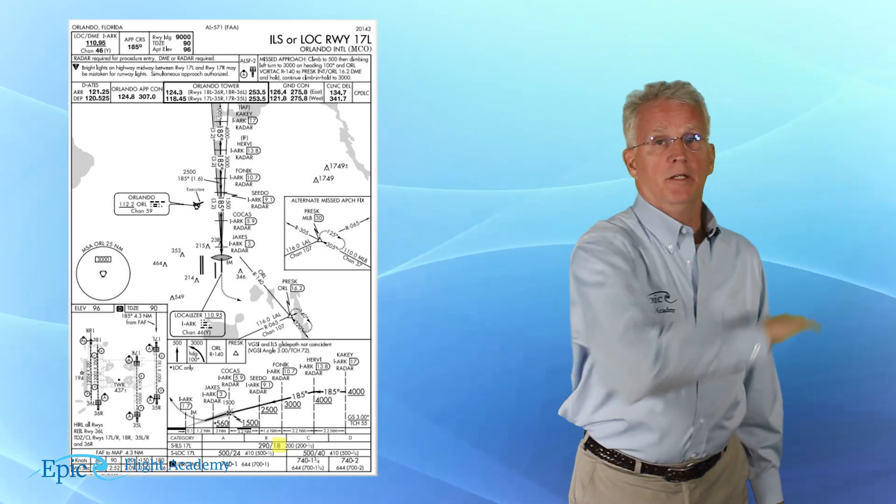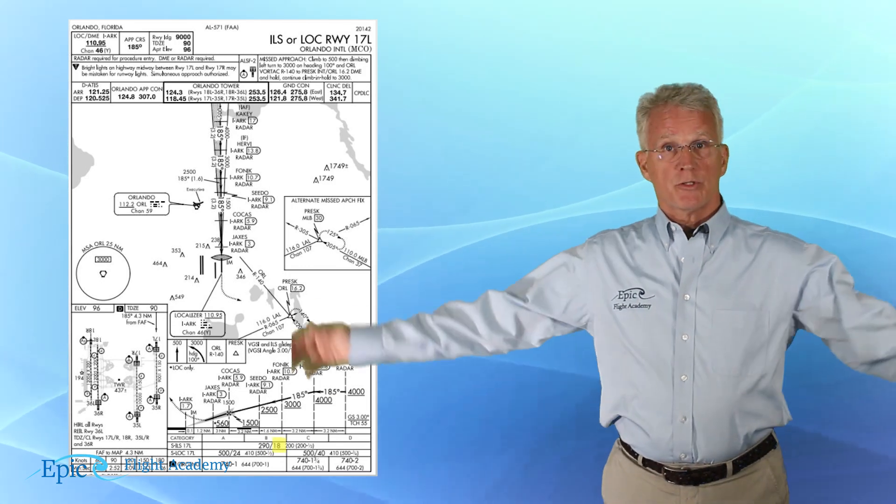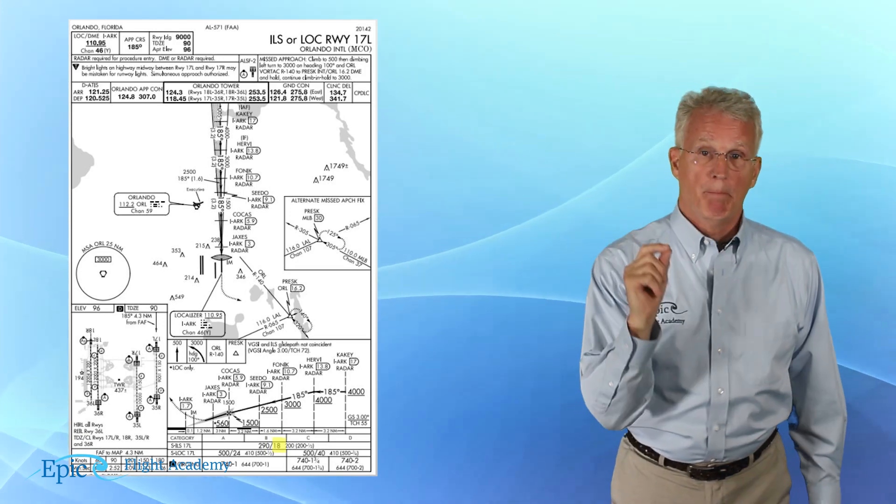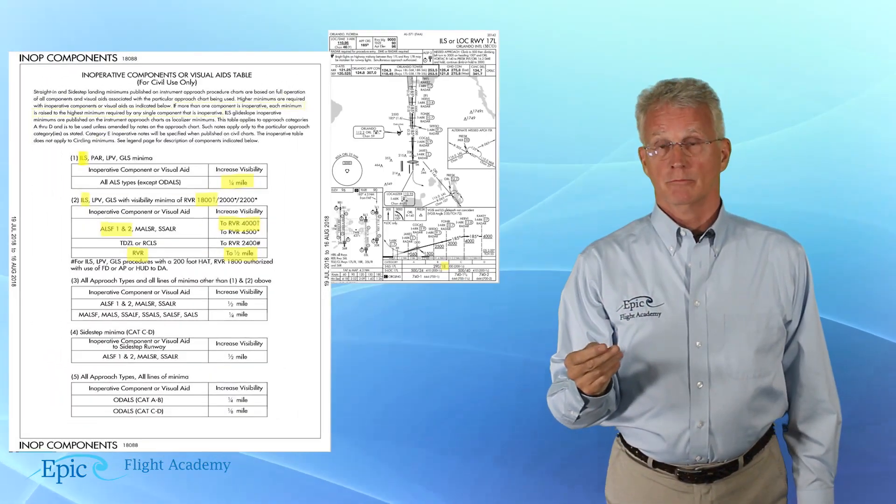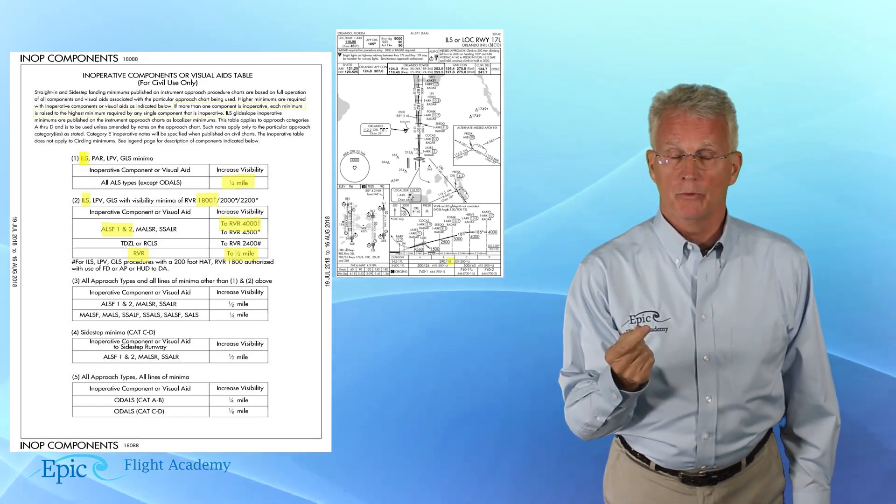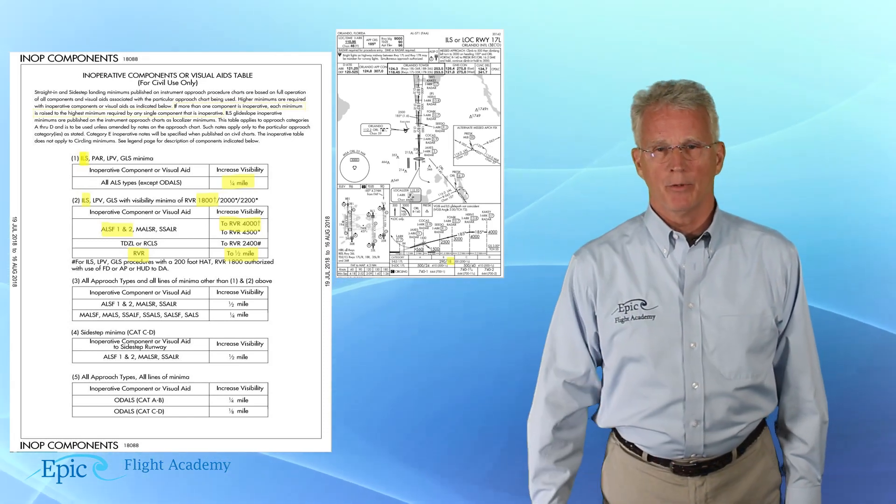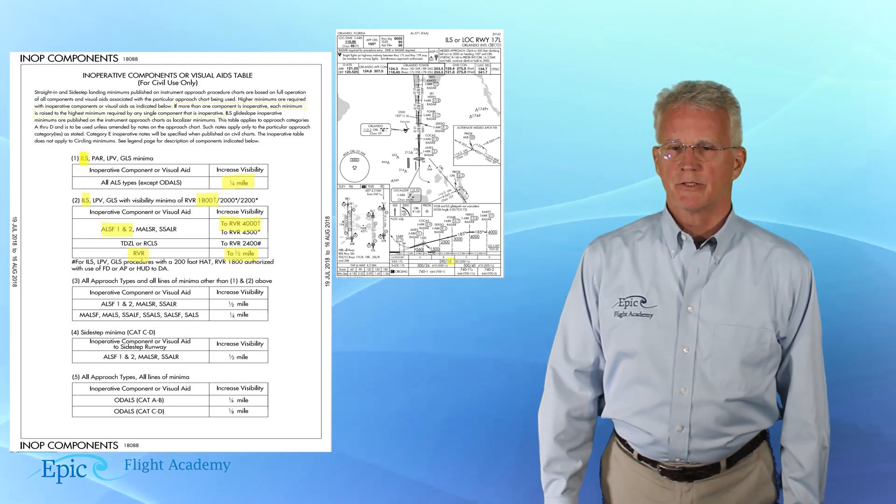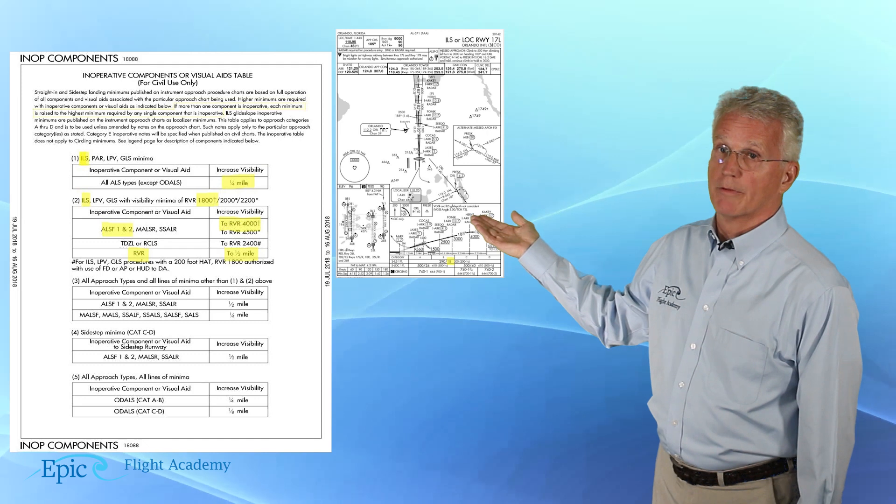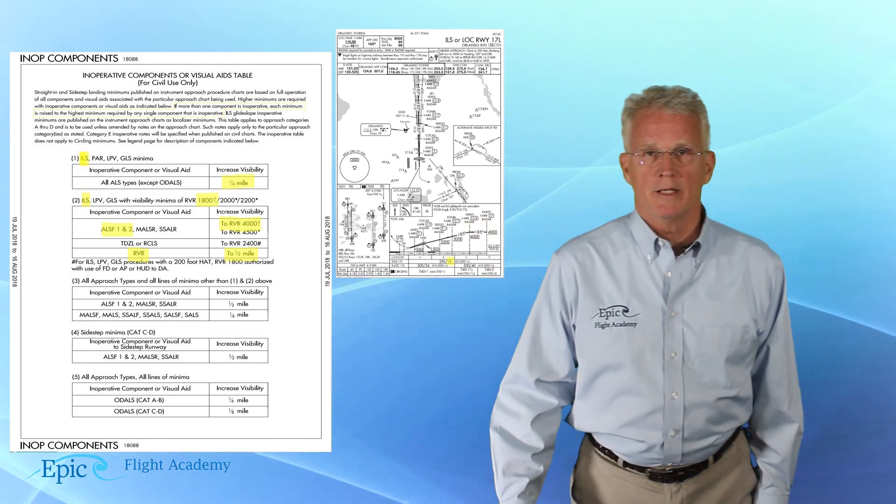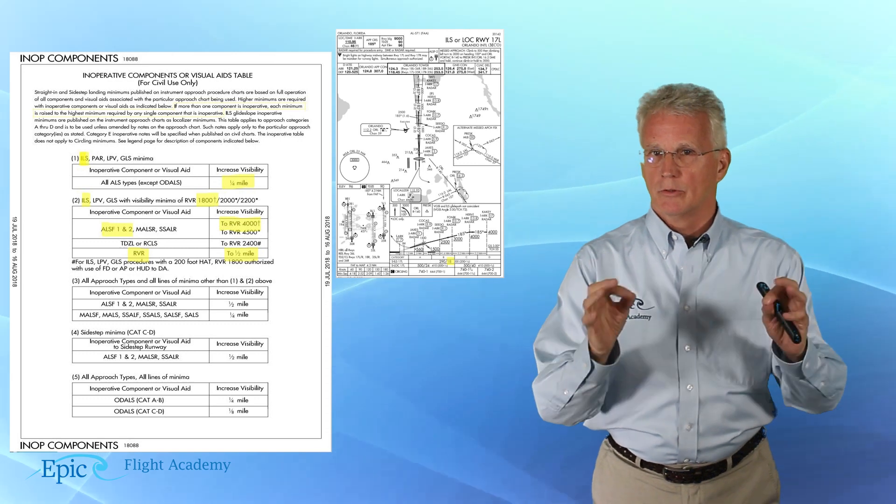Here we are. We're inbound to Orlando. And, of course, we listen to the ATIS, and we find out on the ATIS that both the RVR and the ALSIF-2 are inoperative. So, referring back to section 2 of our inoperative components table, what do we raise our minimums to?